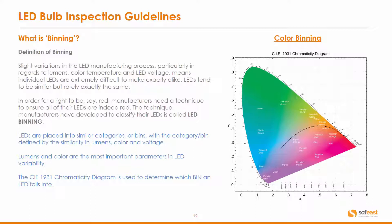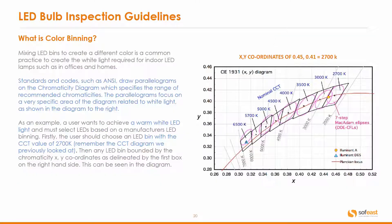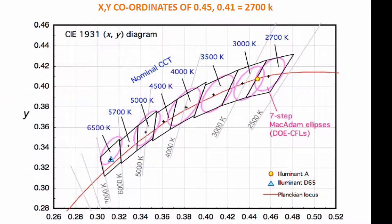The CIE 1931 chromaticity diagram is used to determine which bin an LED falls into. So what is color binning? Mixing LED bins to create a different color is a common practice to create the white light required for indoor LED lamps such as in the office and the home. Standards and codes such as ANSI draw parallelograms on the chromaticity diagram which specify the range of recommended chromaticities. These parallelograms focus on a very specific area of the diagram related to white light, as shown in the diagram on the right-hand side.